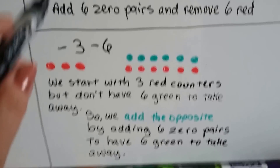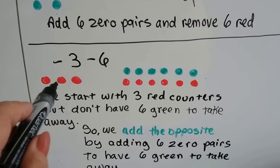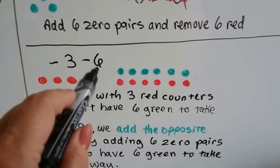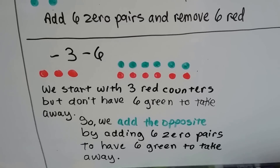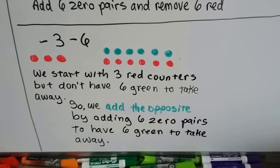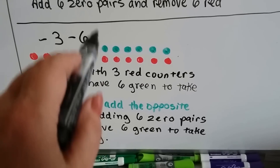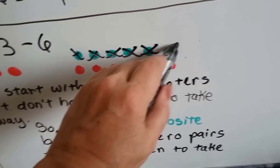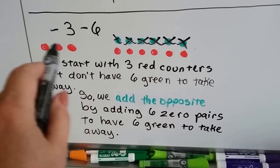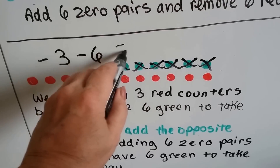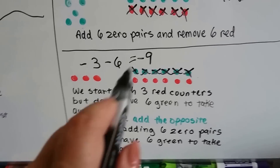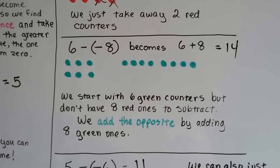Let's look at this one — we'll do it the same way. We start with three red chips and we need to take away six positive ones. It's not in parentheses, so we need to take away six positive ones. What we do is add six zero pairs. Now we can take away the six positive ones, and we're left with three and six red ones — nine red ones — and because they're red they're negative. So you can either do it this way by adding zero pairs or you can do your chips and add the opposite.